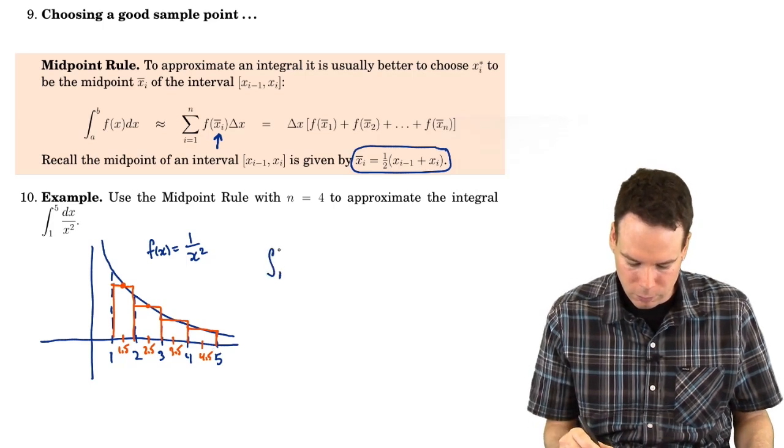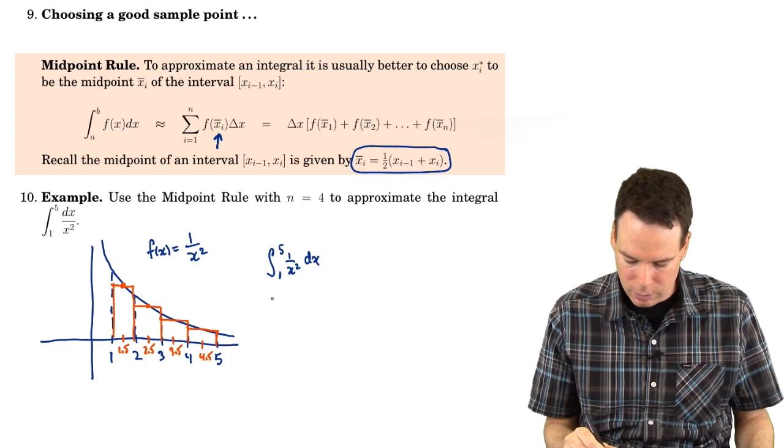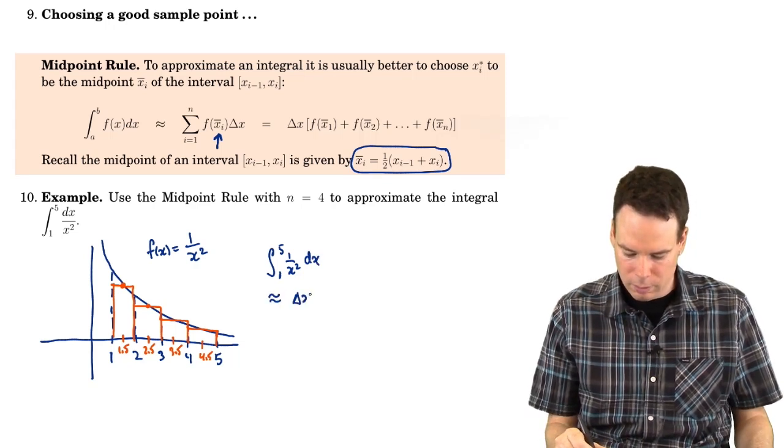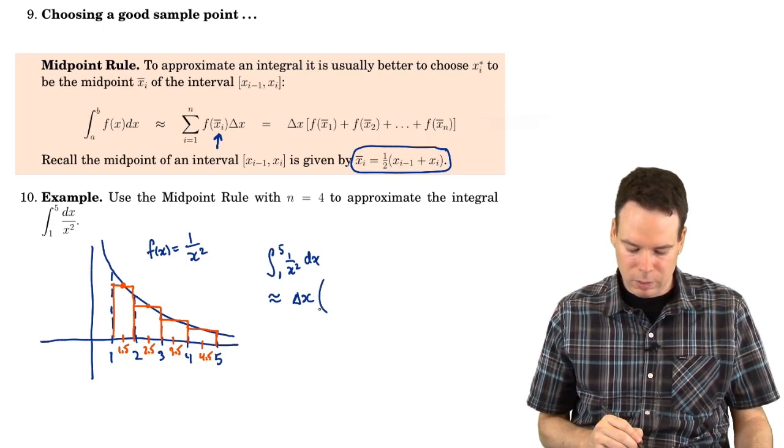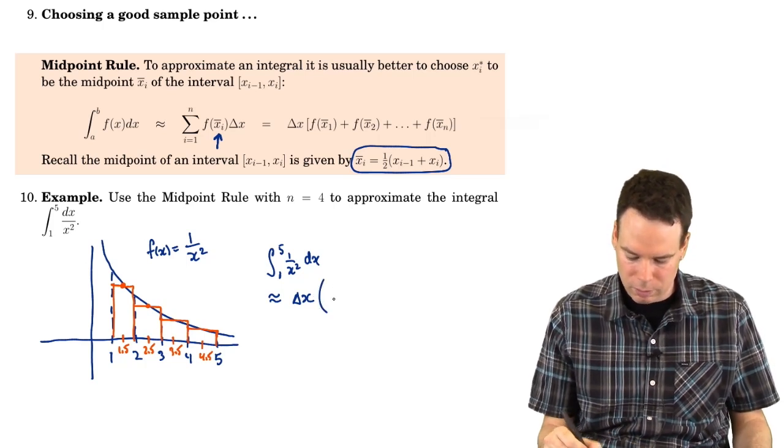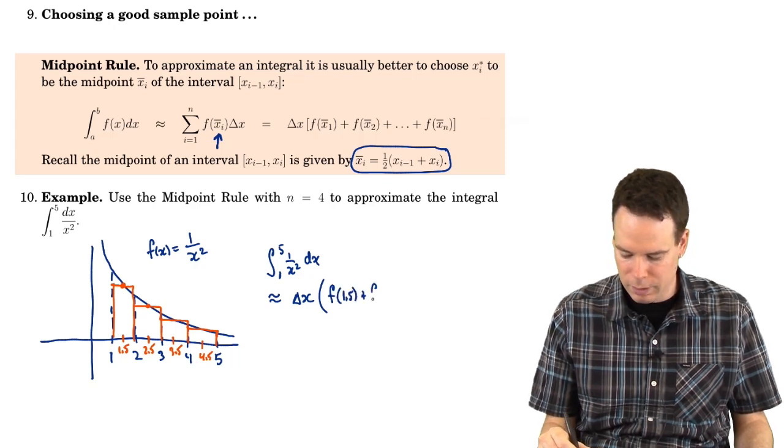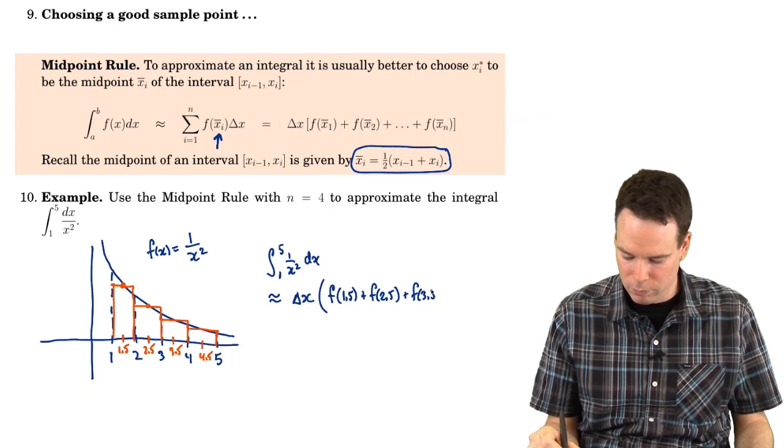So the integral from 1 to 5 of 1 over x squared dx is approximately the width of the rectangles times the heights of the individual rectangles where we're using midpoint. So it would be f of 1.5 plus f of 2.5 plus f of 3.5 plus f of 4.5.